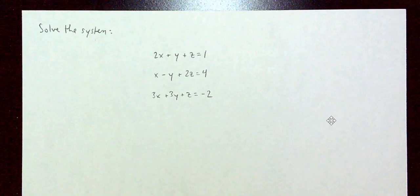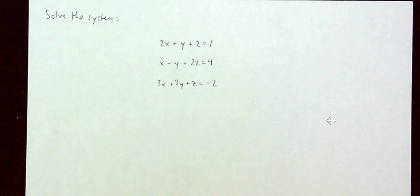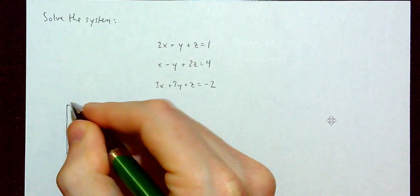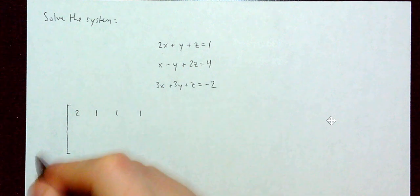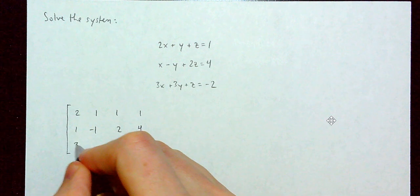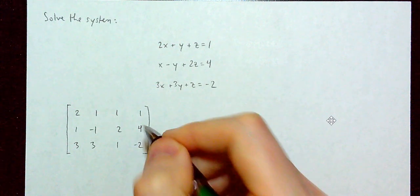So we're going to solve this system: 2X plus Y plus Z equals 1; X minus Y plus 2Z equals 4; and 3X plus 3Y plus Z equals negative 2. We start by writing the augmented matrix: 2, 1, 1, 1 / 1, negative 1, 2, 4 / 3, 3, 1, negative 2.